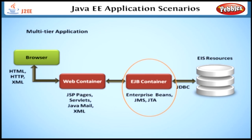The EJB container uses enterprise beans, JMS (Java Messaging Service), JTA (Java Transaction APIs), and JDBC APIs to communicate with the EIS resources. This architecture separates the data access from the application's user interface.